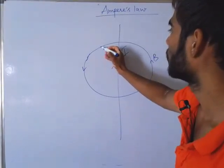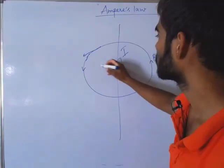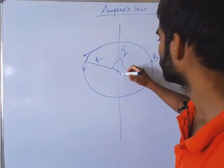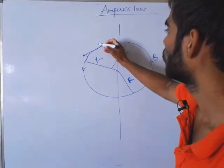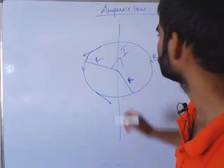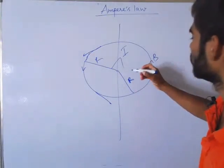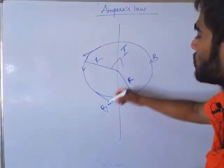And at each and every point the direction of magnetic field is tangential. Suppose distance is R, this distance is R, radius R. At each and every point magnetic field is tangential. And this current is the source of this magnetic field.